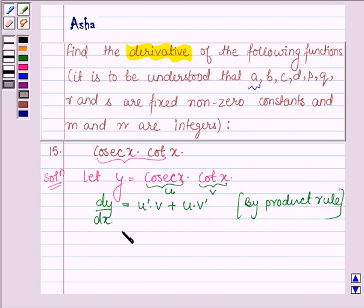So we have derivative of cosec X times V which is cot X, plus U which is cosec X times derivative of V which is cot X.